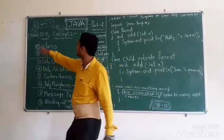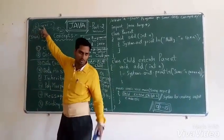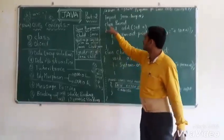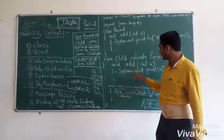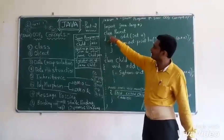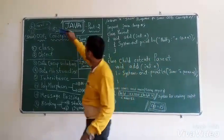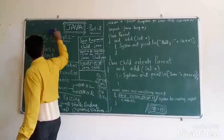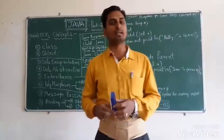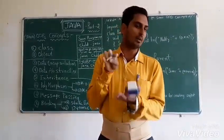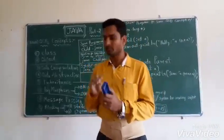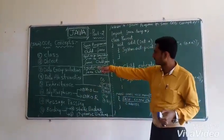Generally a C program starts with main, whereas a Java program starts with class — and inside the class we have the main method. So it gives security. The technical definition: binding or wrapping data at one place is called data encapsulation.